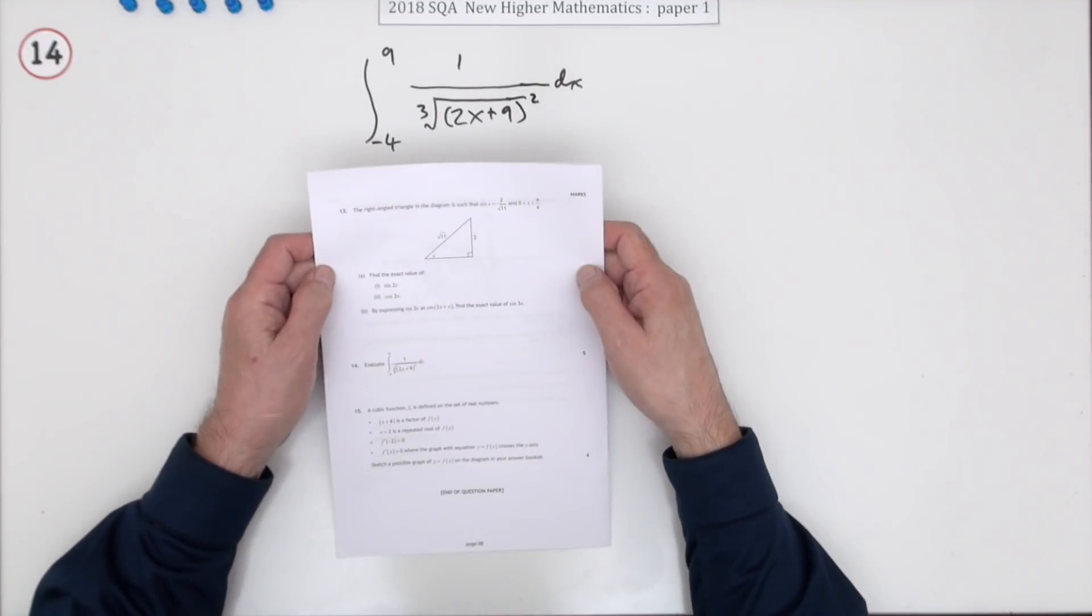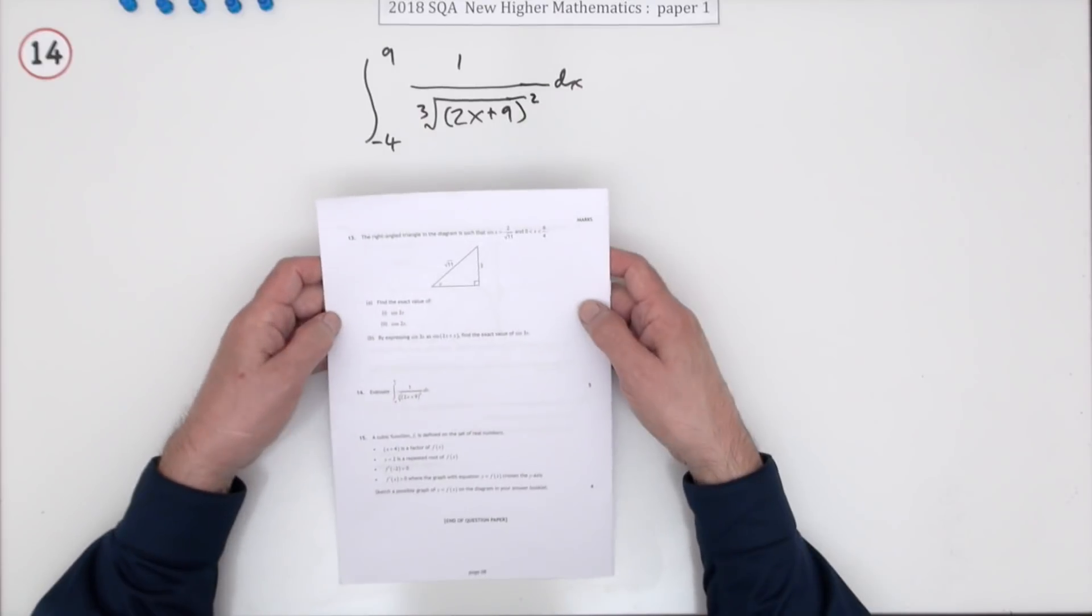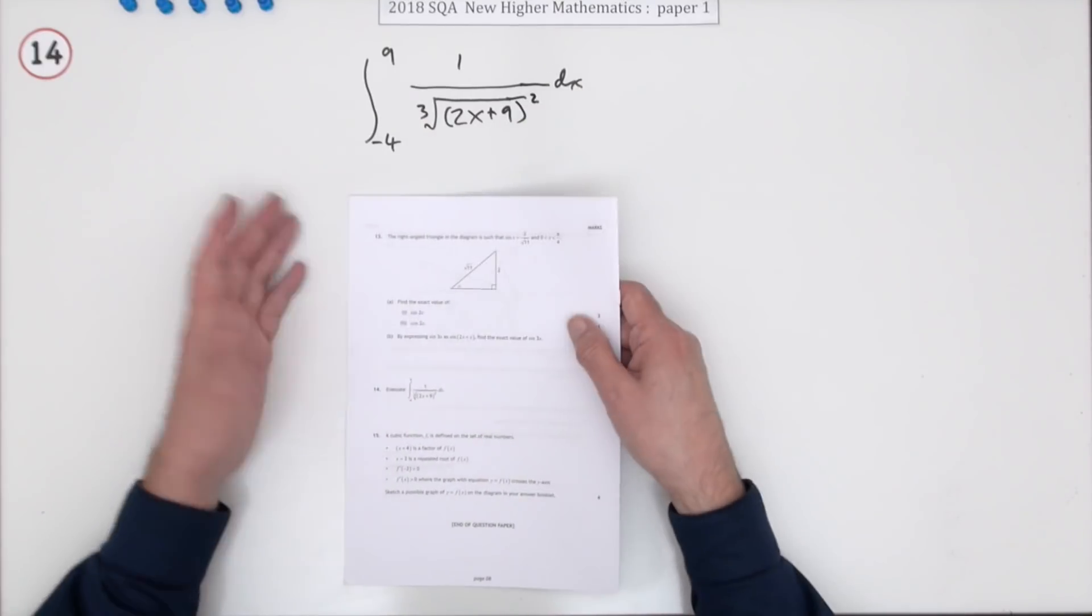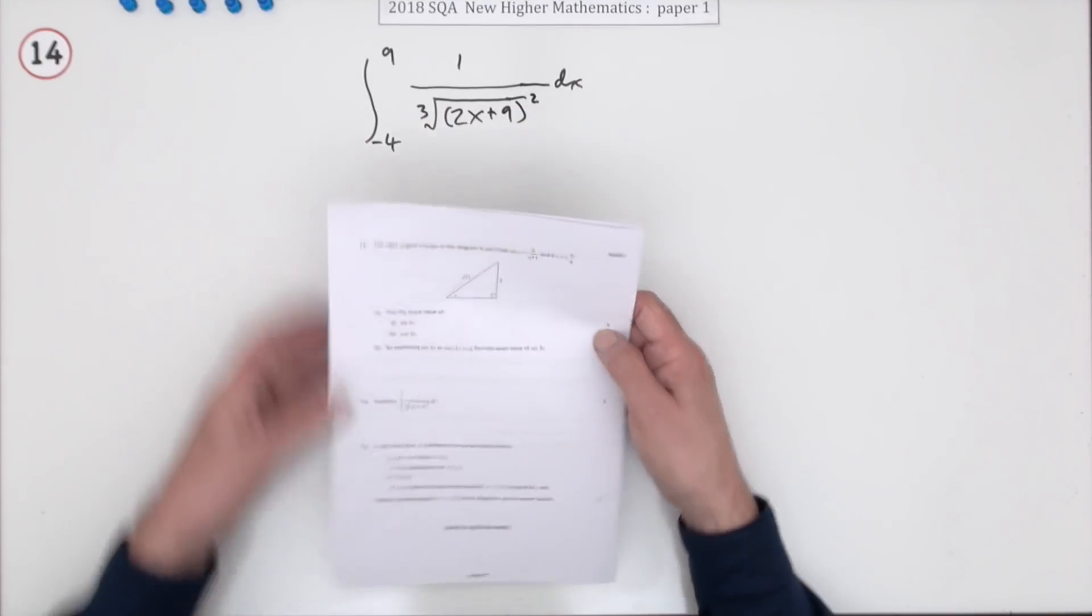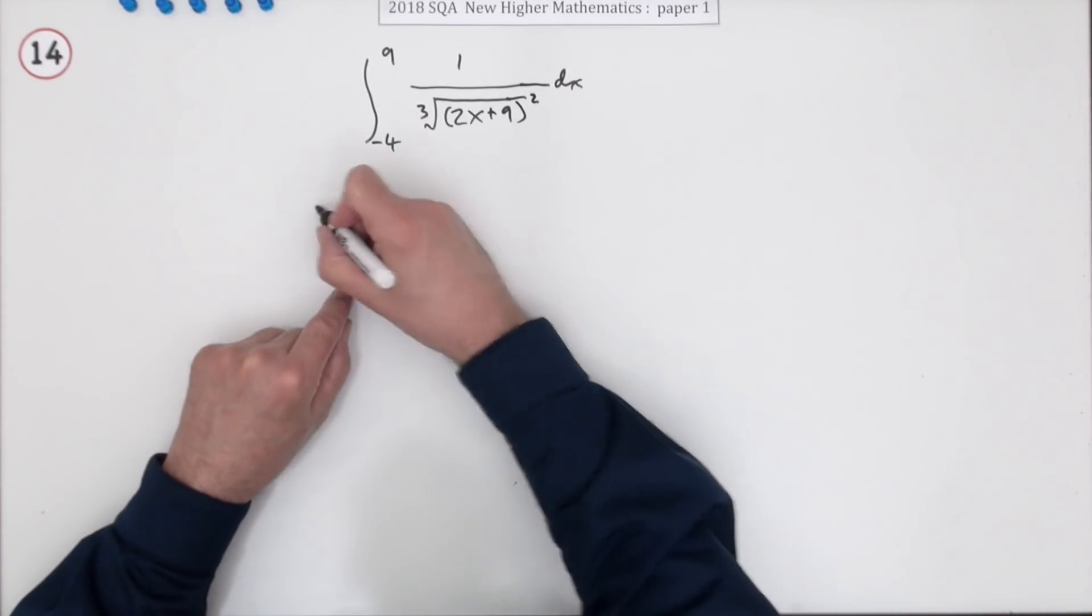Number 14 from the 2018 SQA higher maths paper one, five marks for carrying out an integration. This should be straightforward - there's nothing to think about, you either know how to do it or you don't. And you should know how to do it because it's a straightforward technique.